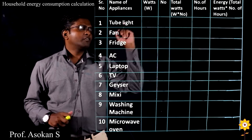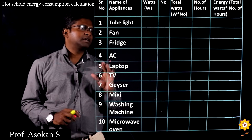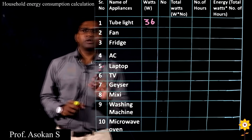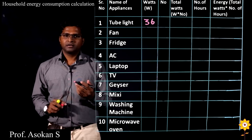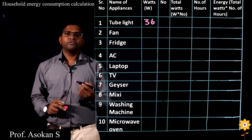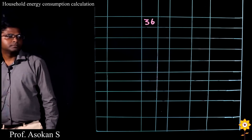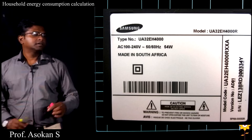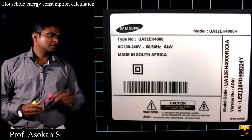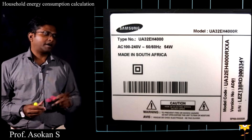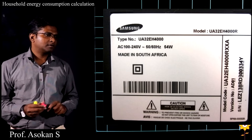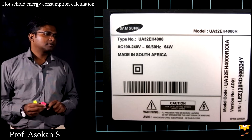Now we consider the tube light. The constant power for a tube light would be 36 Watt — that is a normal one. Suppose if you are using LED or CFL, that may be 9 Watt, 12 Watt, 15 Watt, or 20 Watt. You can ask: how can I find the power rating of any appliance? For example, I have a Samsung TV 32 inch — it consumes 54 Watt. Each and every appliance will have this data. You can find it through the user manual, website, or the power rating nameplate of the appliance.